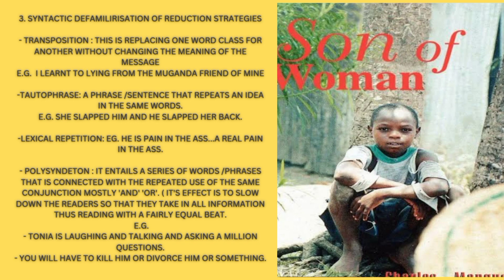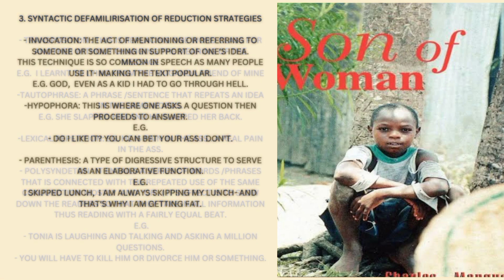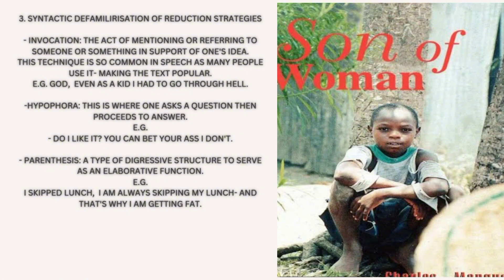Another one: lexical repetition — for example, 'He isn't a pain in the ass, he's a pain in the ass, I've been a pain in the ass.' Polysyndeton entails a series of words connected with the repeated use of the same conjunction, mostly 'and.' Its effect is to slow down the reader so they take in all the information with a fairly equal beat. Example: 'Tonya is laughing and talking and asking a million questions — you'll have to kill him, divorce him, or something.'